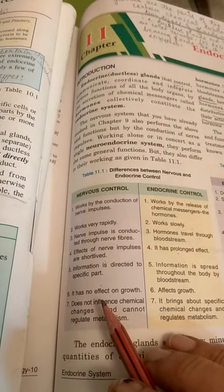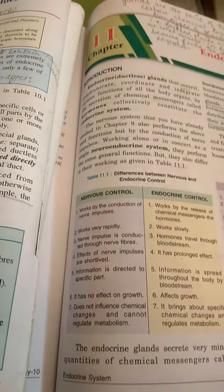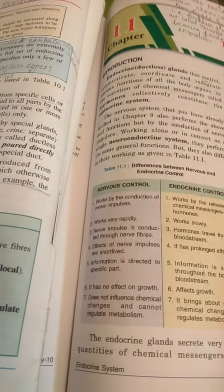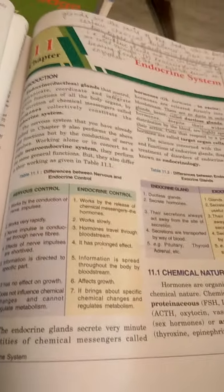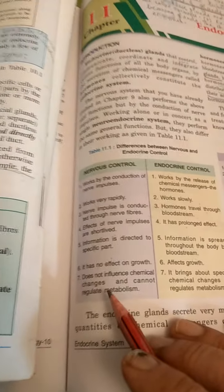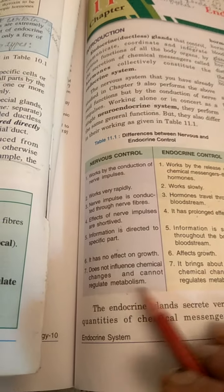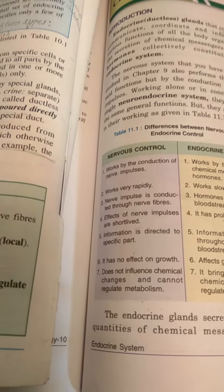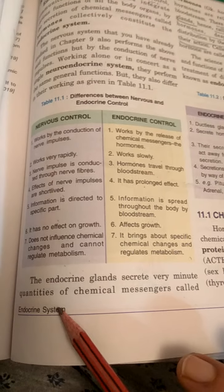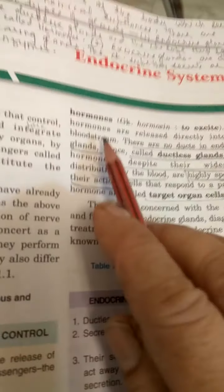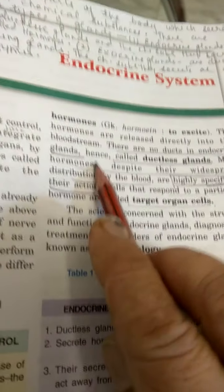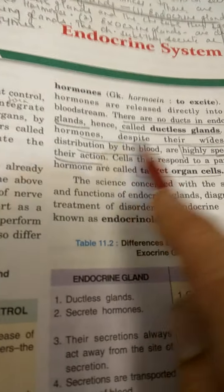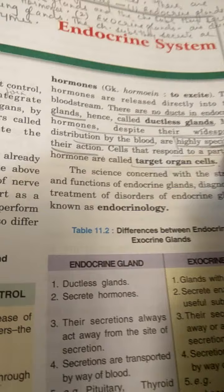The nervous system does not affect the growth of the body, whereas hormones are responsible for affecting growth as well. Nervous control also cannot influence chemical changes or regulate body metabolism — it cannot control basic functions like breaking down carbohydrates, proteins, and fats — and all of these are controlled by the endocrine system. Endocrine glands secrete very minute quantities of chemical messengers called hormones, which are released directly into the bloodstream. As there are no ducts, they are called ductless glands.